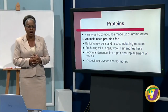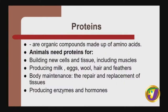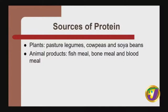Proteins are organic compounds made up of amino acids. Animals need proteins for building new cells and tissues including muscles, producing milk, eggs, wool, hair, and feathers. They also need protein for body maintenance — that is the repair and replacement of tissues — and for producing enzymes and hormones. Sources of protein from plants include pasture legumes, cow peas, and soybeans. From animal products: fish meal, bone meal, and blood meal.